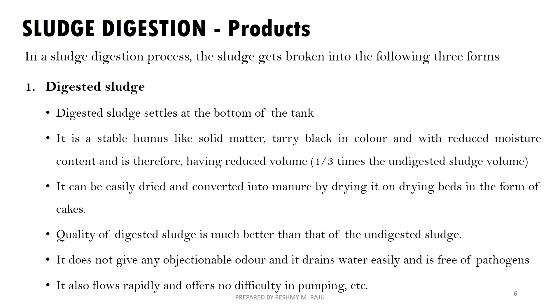In sludge digestion, we get three products: first, digested sludge; second, gas; and third, supernatant liquor.